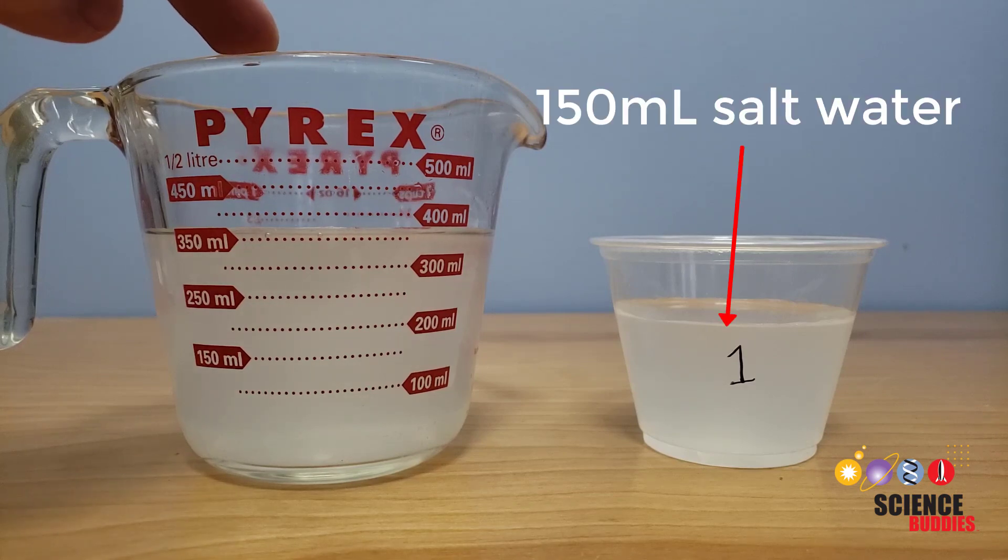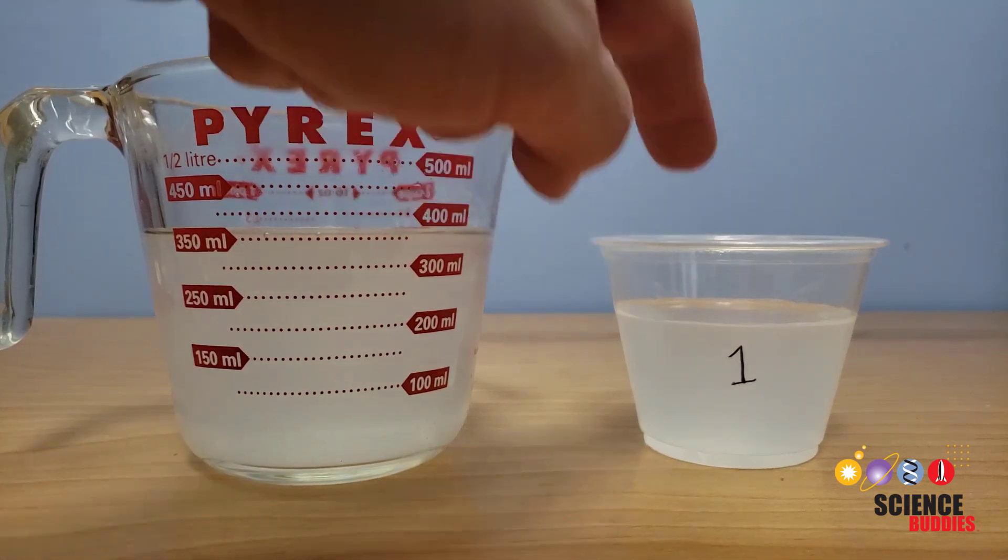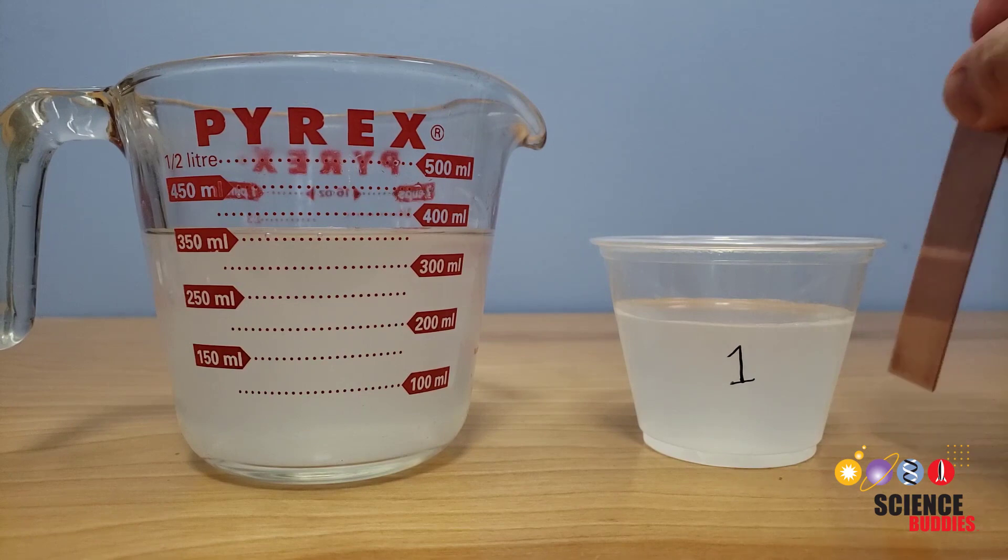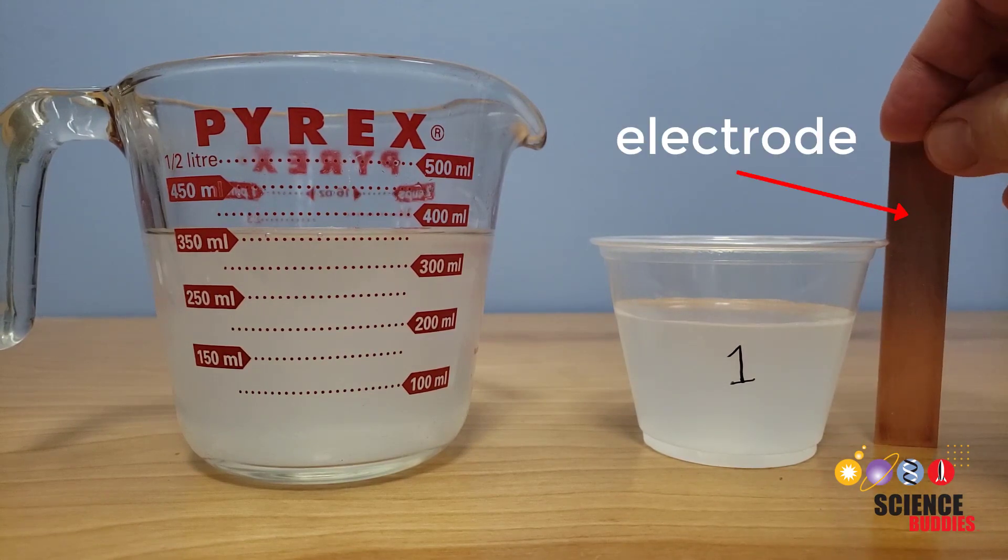Next add 150 milliliters of your solution to a glass or plastic cup. The cup should be shorter than your electrodes because this will make it easier to connect the alligator clips.